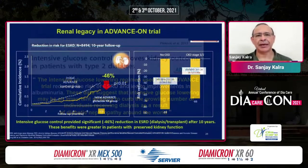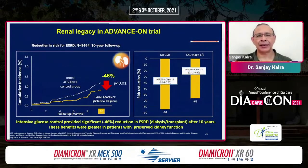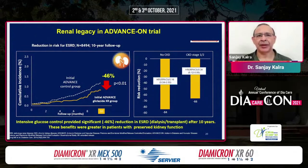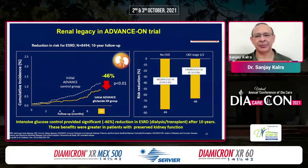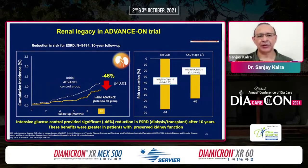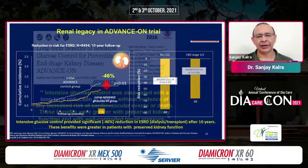We speak of metabolic memory — metabolic karma. The ADVANCE trialists went on to conduct the ADVANCE-ON trial, where after the initial five years of therapy, they followed up patients for 10 years. Participants who had received tight control initially with gliclazide MR continued to enjoy freedom from kidney disease and end-stage renal disease even after 10 years. Initially it was a 65% reduction, and even after 10 years there was a 46% reduction in the risk of developing ESRD — as diagnosed by need for dialysis, kidney transplant, or renal replacement therapy. These benefits were greater in patients with preserved kidney function.